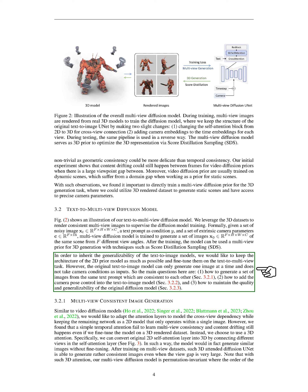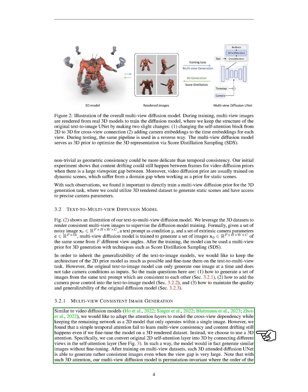This leads us to three main questions: 1. How can we generate a set of images from the same text prompt that are consistent with each other? 2. How can we incorporate camera pose control into the text-to-image model? 3. How can we maintain the quality and generalizability of the original diffusion model? To generate consistent images, we adapt the attention layers to model the cross-view dependency, similar to video diffusion models. However, we found that simple temporal attention wasn't enough to learn multi-view consistency, and content drifting still occurred. Instead, we decided to use 3D attention by connecting different views in the self-attention layer.